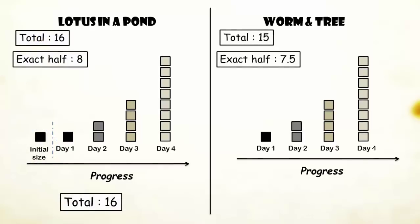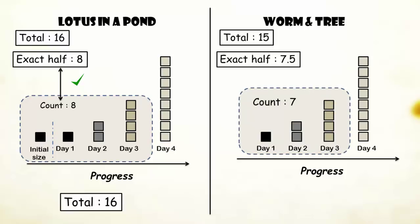So, in the case of lotus, the exact half can be reached just one day before the final day. Whereas, in the case of worm, up until the last but one day, the count would always be short of a fractional value of 0.5.